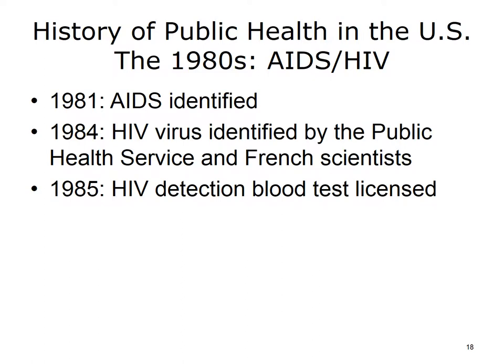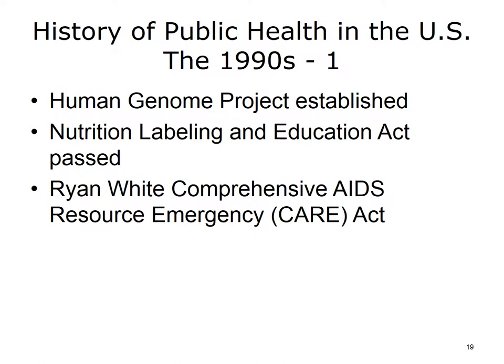AIDS is a chronic condition caused by the human immunodeficiency virus. In 1981, AIDS was identified as a condition. In 1984, the virus was identified. And in 1985, a detection blood test was licensed.